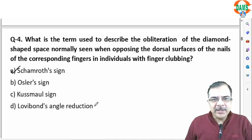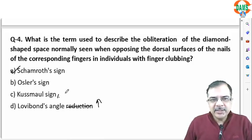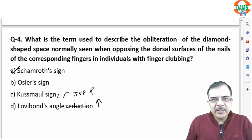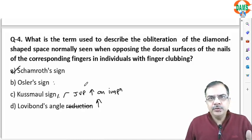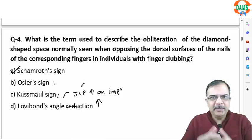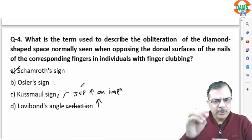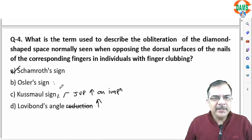Lovibond angle reduction is not correct — it is actually an increase in the Lovibond angle to more than 180 degrees in clubbing. Cusmaul's sign is a JVP sign, referring to JVP increasing in the inspiratory phase, unrelated to clubbing. Osler's sign is used for pseudo-hypertension, where the radial artery is palpable even when BP is inflated above systolic pressure — also unrelated to clubbing.